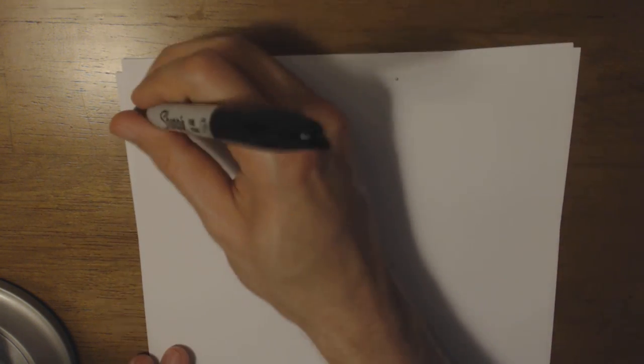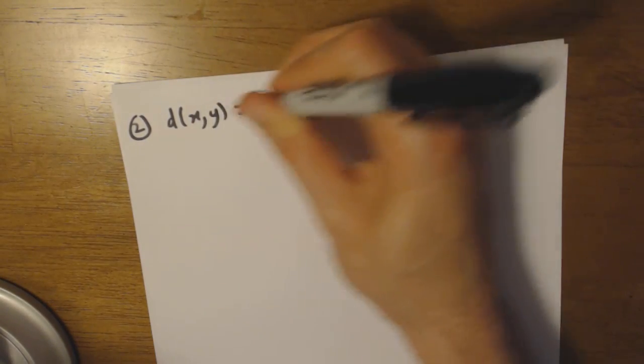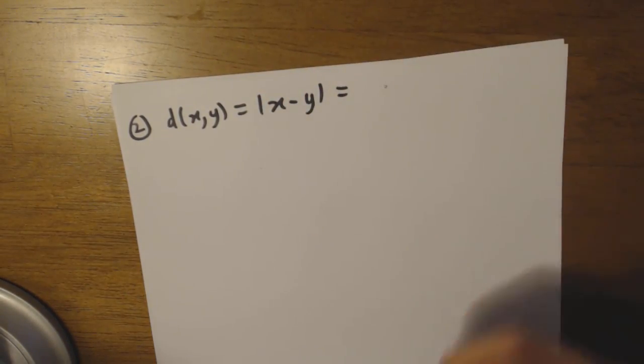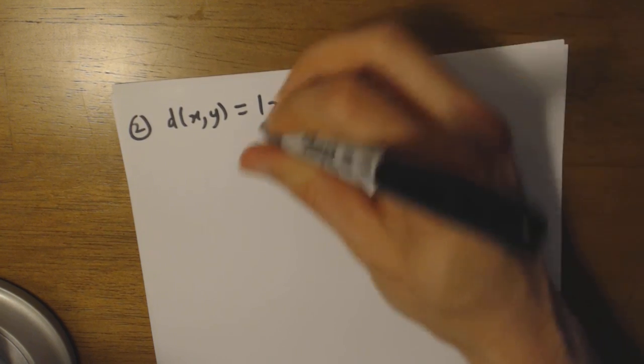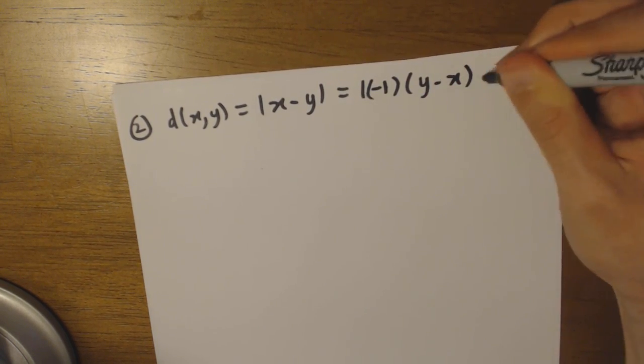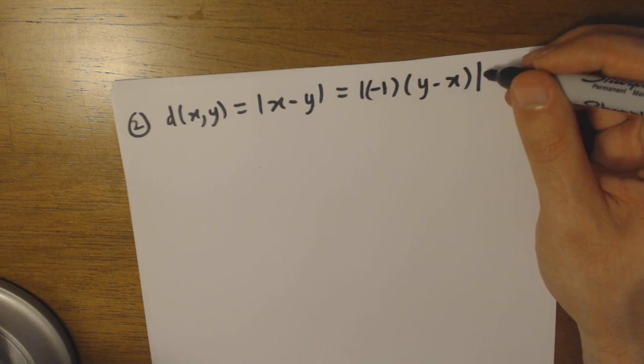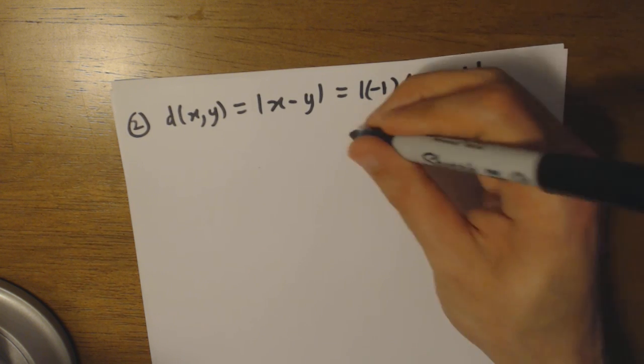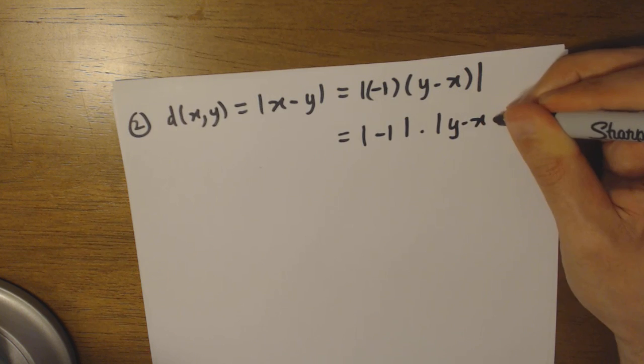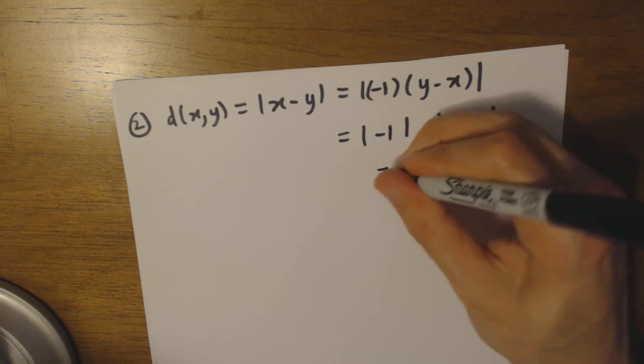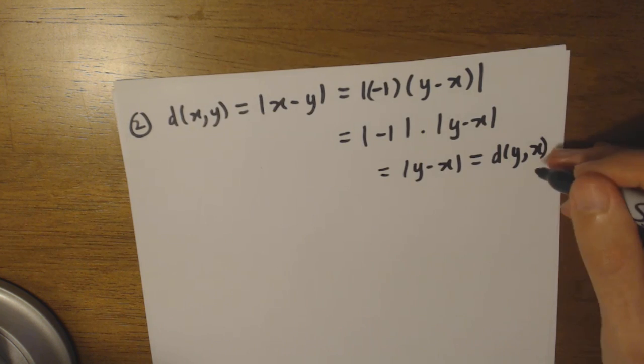Now let's check symmetry. This one is a little bit more tricky, but not too tough. d(x,y) equals absolute value of x minus y. We can factor out a negative one, still inside the absolute value, and write |(-1)(y-x)|. By properties of absolute value, when things are being multiplied inside the absolute value sign, we can separate them. So |-1| times |y-x|. Absolute value of negative one is just one. So this equals |y-x|, which equals d(y,x). We have shown symmetry.